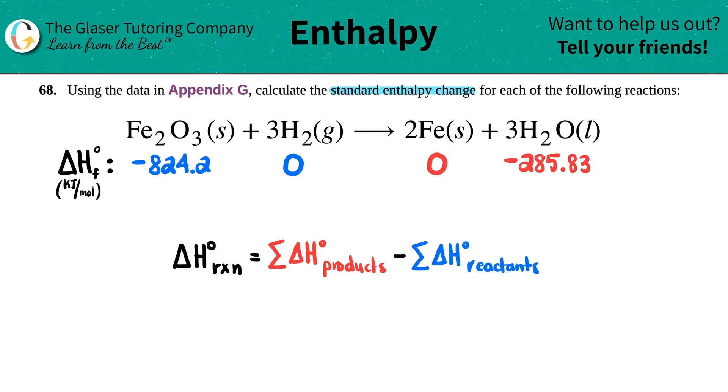So what we do is we take the numbers that were on the Appendix G, and we times by how many you have in the balanced equation. So for example, there was only one Fe2O3, so technically I would take this number and times it by one. There was three H2Os, so I would multiply that number by three. There was two irons, so I'll multiply this by two. And then there's three H2Os, and I would multiply this by three.